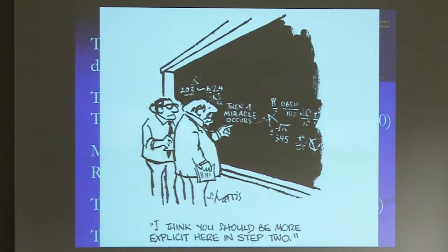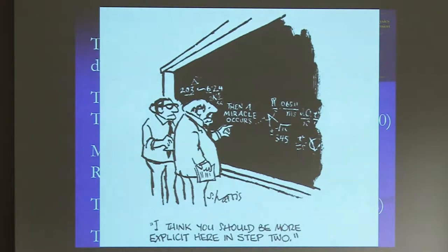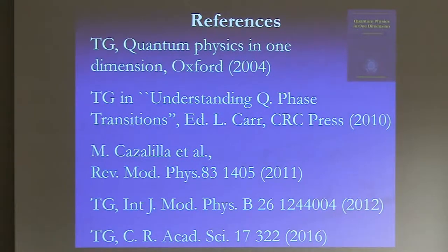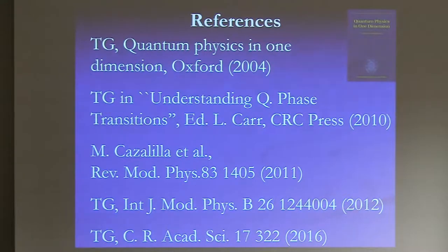I will also go very fast on the theory aspect. Many of you are already familiar with 1D theory and there are a lot of experts in the room. I'll take the approach of 'then a miracle occurs' — I won't be more explicit in step two. If you want to know more, here is a list of various references where you can find details on the various aspects of 1D systems — from an exhaustive book on 1D systems to more recent reviews on various aspects.